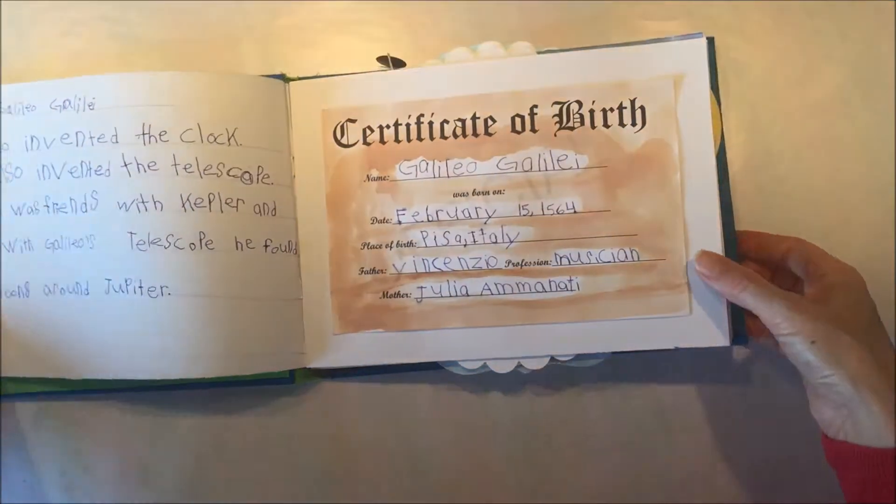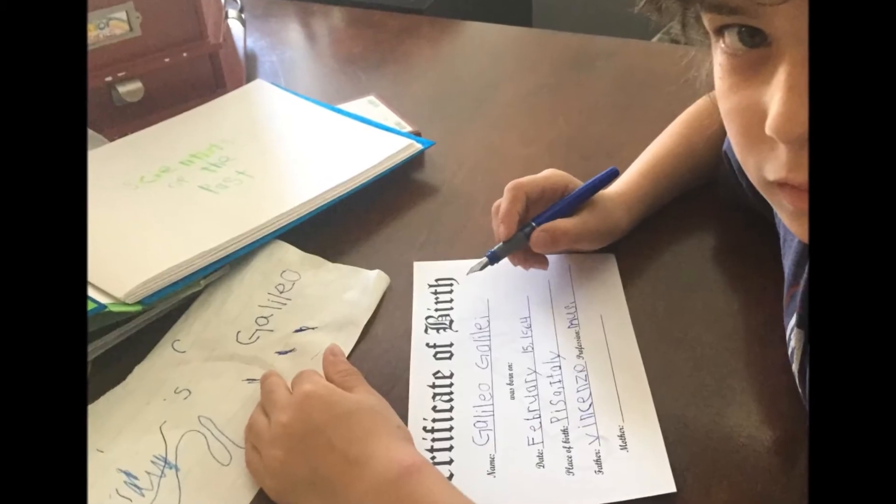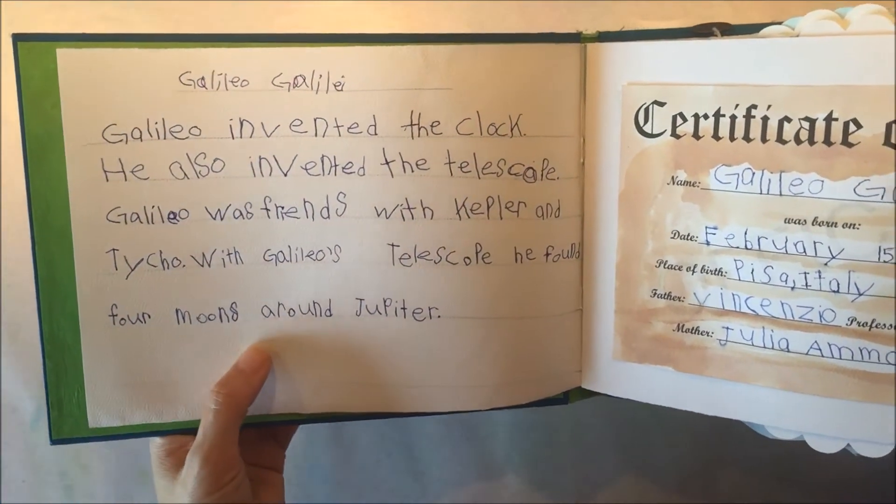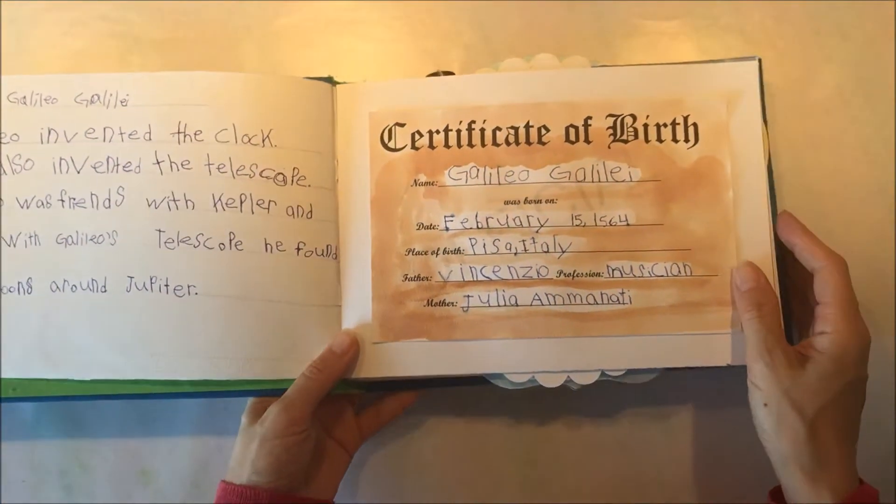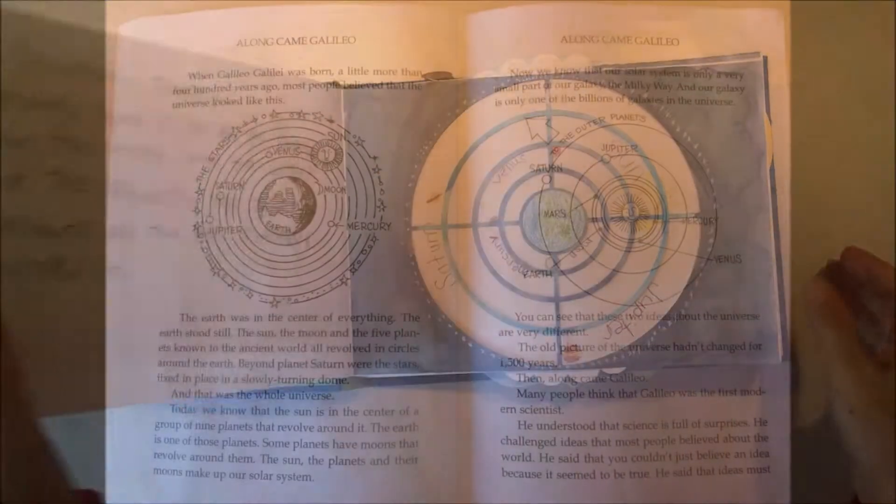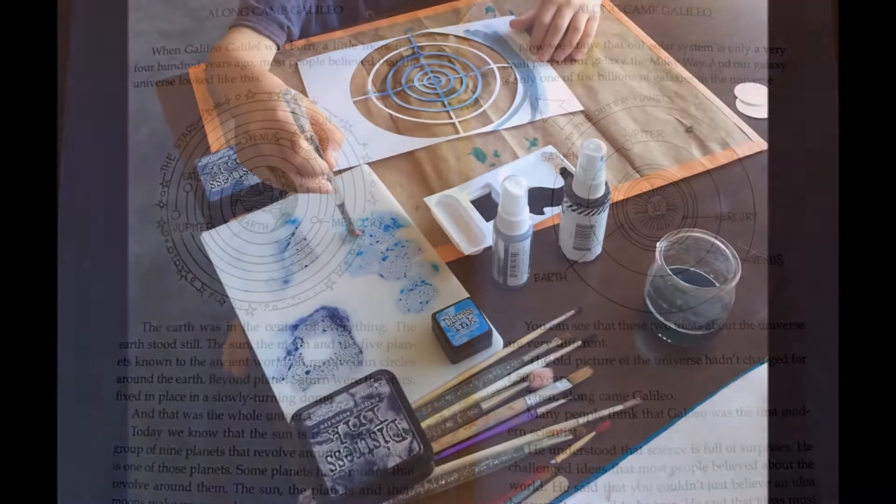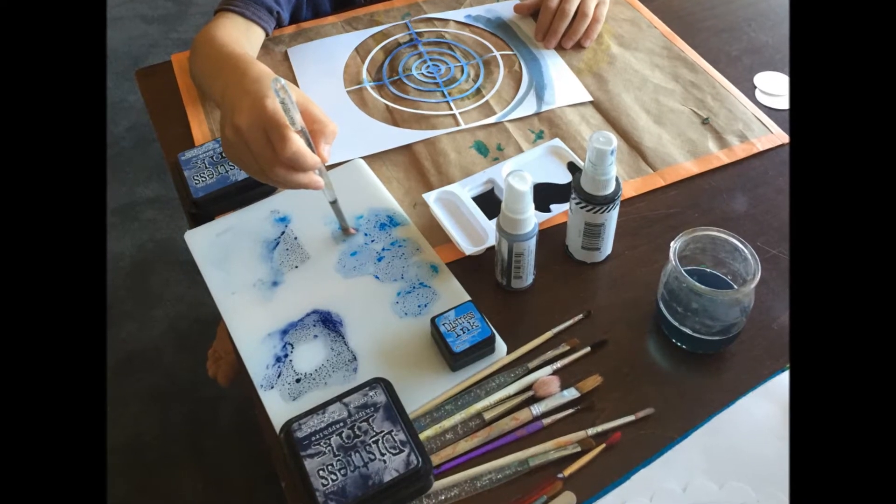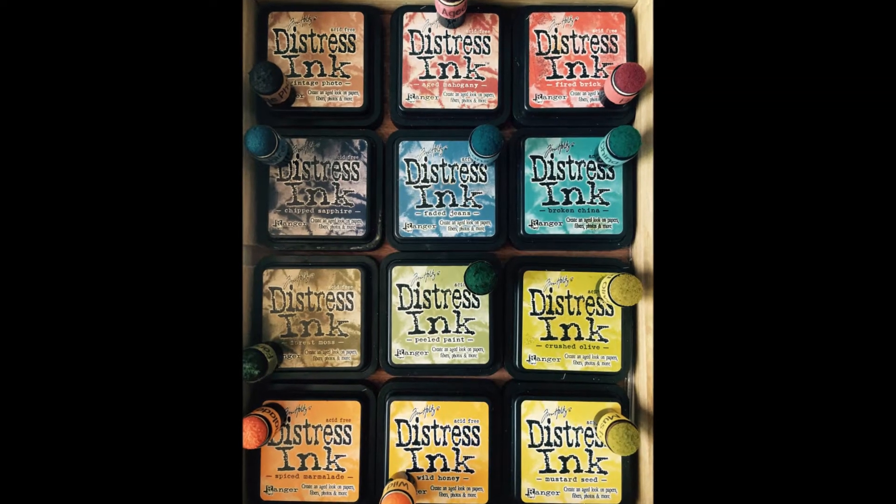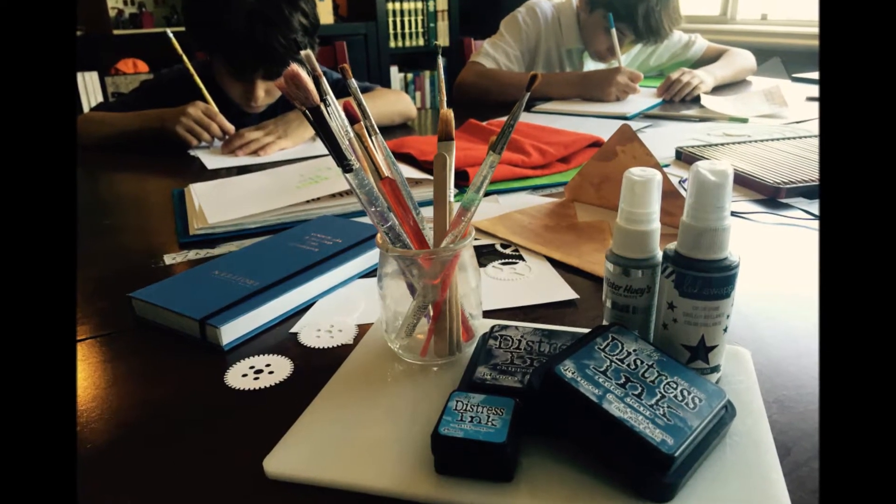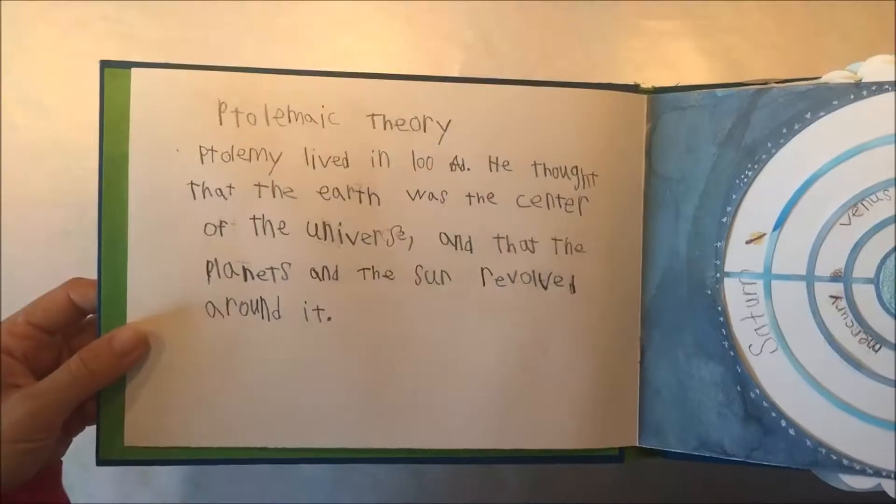So the first thing that we did was make a birth certificate for Galileo. And there was my eight-year-old who was writing in the birth certificate. And then the next interactive page has the Copernican model and then the Ptolemaic model, or I think Ptolemaic first and then Copernican model of the solar system.